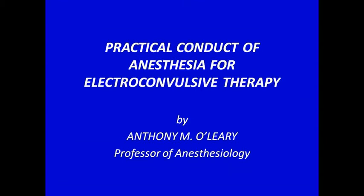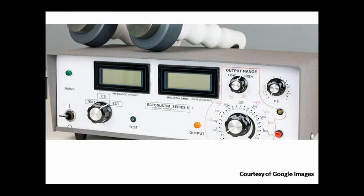Welcome to the practical conduct of anaesthesia for electroconvulsive therapy. This is a procedure as opposed to an operation, so electroconvulsive therapy is usually performed outside the operating room. It utilises an electrical shock of very specific waveform, duration, intensity and energy level applied extremely briefly to a patient's head. This is done to induce a seizure, and to do this we require an electrical generator — an ECT machine, as shown.